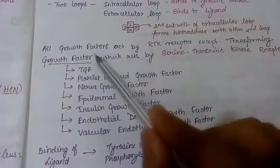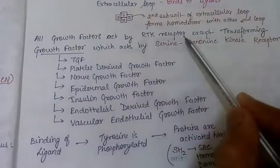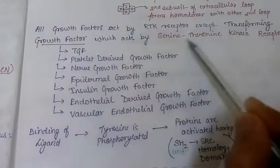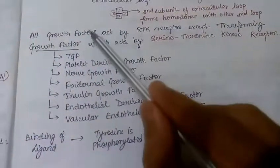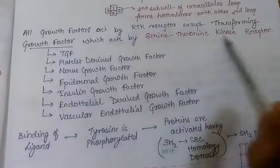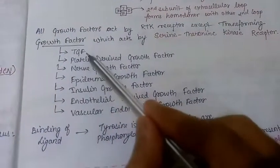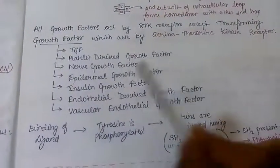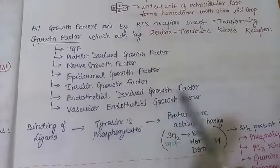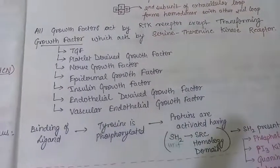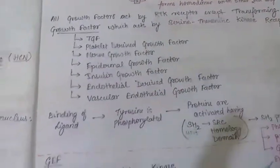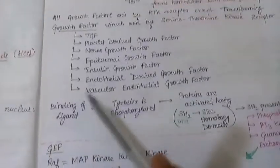All growth factors act via RTK (receptor tyrosine kinase) receptors, except transforming growth factor, which acts via serine-threonine kinase receptors. Examples of growth factors include platelet-derived growth factor (PDGF), nerve growth factor (NGF), epidermal growth factor (EGF), insulin-like growth factor (IGF), and vascular endothelial growth factor (VEGF).